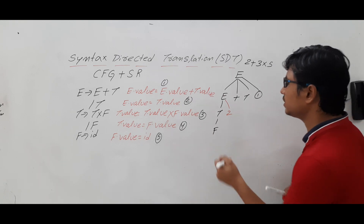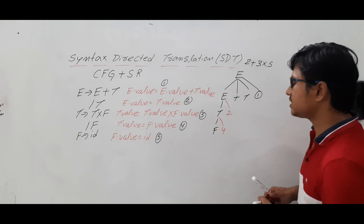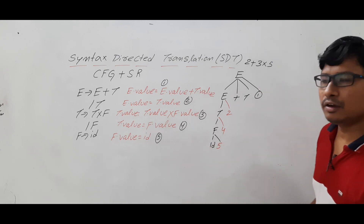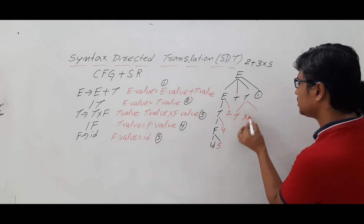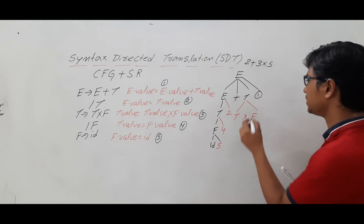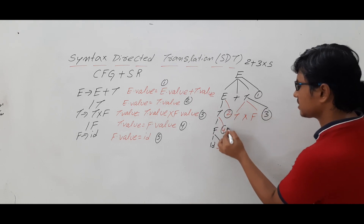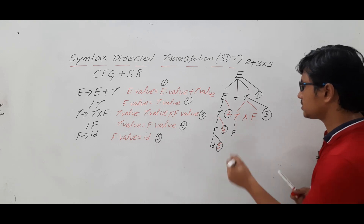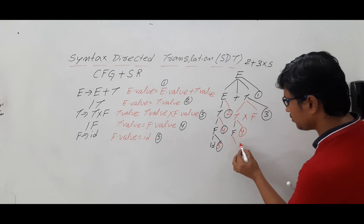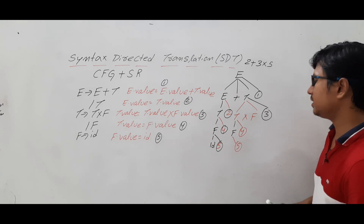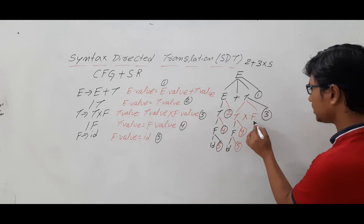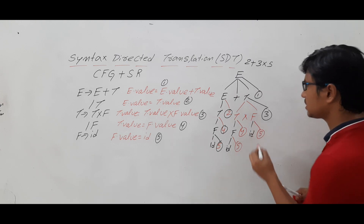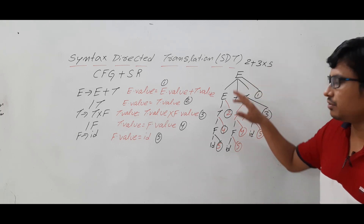T determines F and the corresponding rule is rule number five. From this T I want to do T star F and the corresponding rule is rule number three. From this T I want to go for F and the corresponding rule is rule number four. From F I want to go for ID — the rule number is five. Similarly, this F is determining ID and the corresponding semantic rule is rule number five.